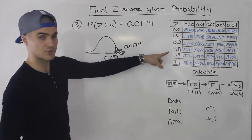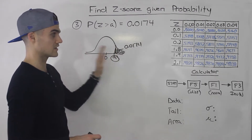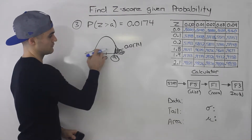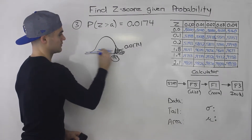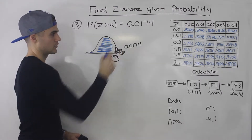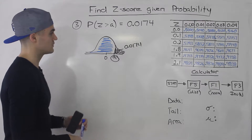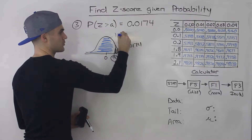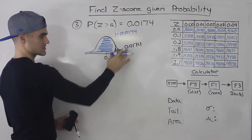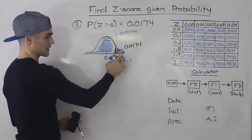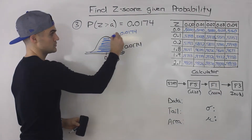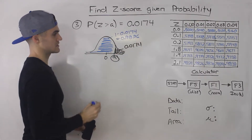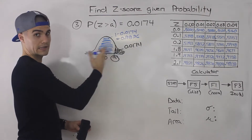The problem is that the z-score table gives us all the probabilities to the left — it gives us the left-tail probabilities, not the right-tail probabilities. So what we have to do is find the corresponding left-tailed probability in order to use the table. The way we do that is: 1 minus 0.0174. Because the total area is 1, and if we subtract this right-tail area, we end up with the left portion. When you do that, 1 minus 0.0174, you get 0.9826.